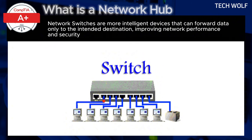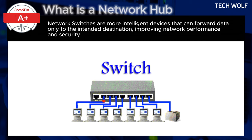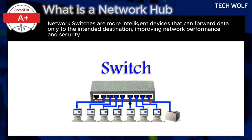The key takeaway from this video is that hubs broadcast received data to all connected devices, which is the main reason they have been largely replaced by network switches. Network switches are more intelligent devices that can forward data only to the intended destination, rather than forwarding it to all connected devices.